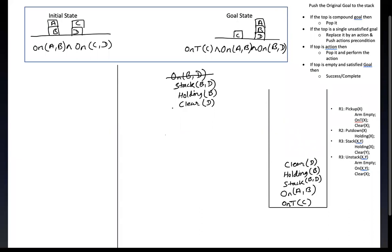Since the top is a single unsatisfied goal, we have to remove it and put the action. To make d clear, we have to unstack what is on top of d. So we apply unstack — this is Rule 4. I am writing Rule 4 here: unstack.